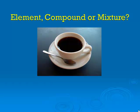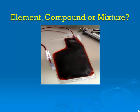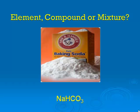Coffee is a homogeneous mixture — it's a solution. H2O, pure water — that's a compound. Tap water would be a mixture because there are things dissolved in it. Blood is a heterogeneous mixture — it's actually a suspension. If you let blood sit for a while, it'll settle and the cells will sink to the bottom. Toothpaste is a mixture, and this particular toothpaste has little sparkly particles in it, so I would call this a colloid. Baking soda, NaHCO3 — this is a compound.